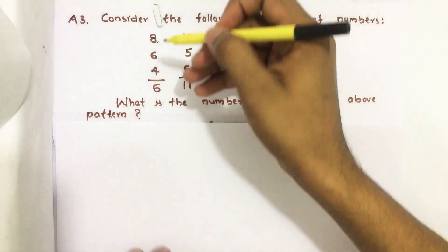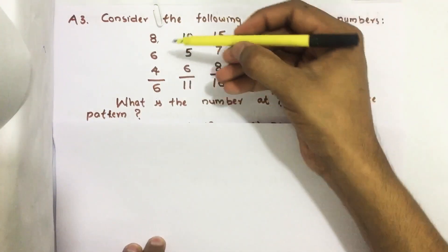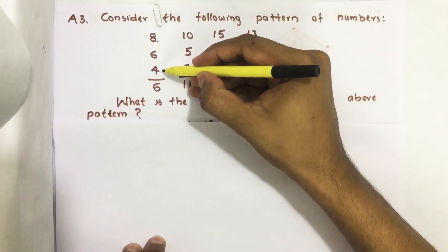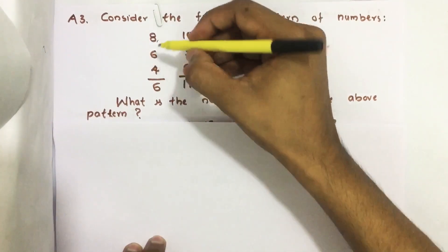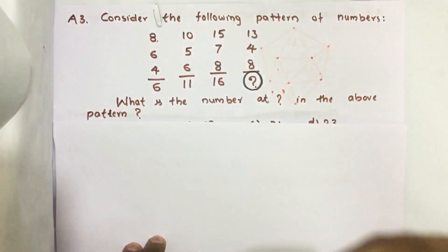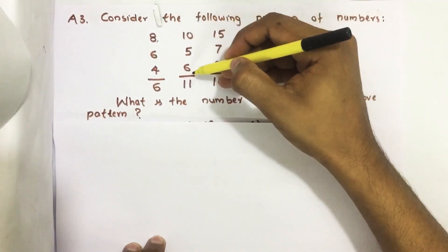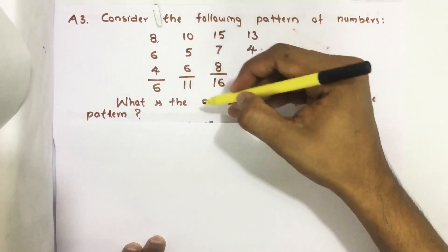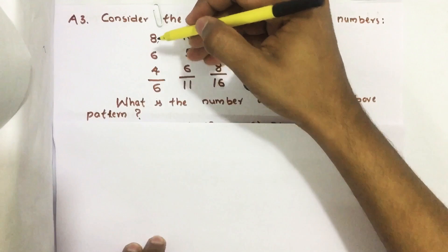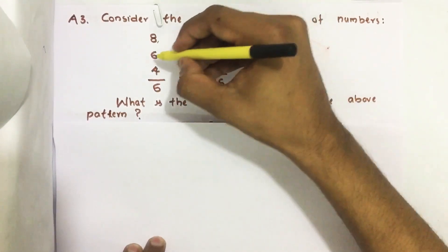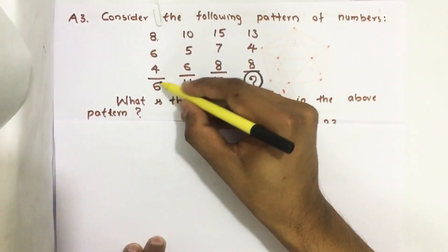Let us see what the relationship is. 8 plus 4 minus 6 equals 6. Similarly, 10 plus 6 minus 5 equals 11. That means first number plus third number minus middle number gives us this answer.